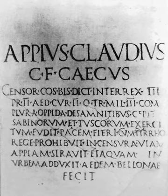Short E most likely had a more open allophone before R and tended toward near-open /a/. Short E and I were probably pronounced closer when they occurred before another vowel. Short I before another vowel is often written with I longa, indicating that its quality was similar to that of long I, and is almost never confused with E in this position.